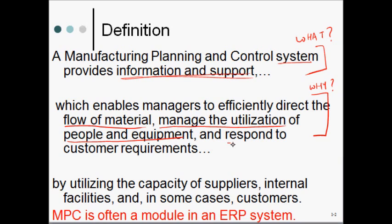We want to make sure that we are able to utilize the people and material resources to the most optimum level, thereby reducing cost and improving customer service, and responding to all customer requirements in the most optimal way. Manufacturing, planning, and control system is often a module in an ERP system — an enterprise resource planning system like SAP. In today's business world, organizations are using enterprise resource planning softwares to manage an integrated business.